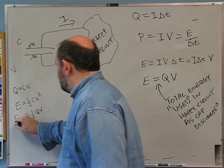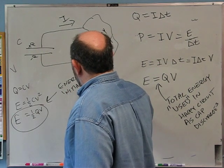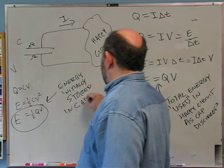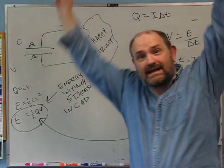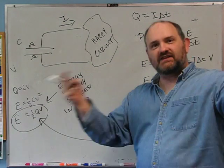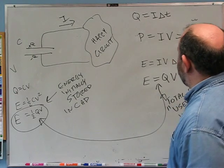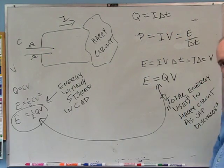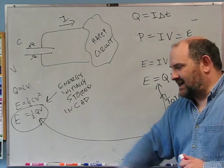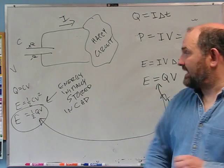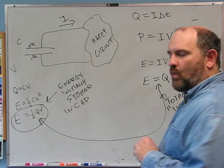But wait: the energy initially stored in the capacitor is one-half QV, while the energy dissipated is QV. They are not the same — we seem to be discharging twice as much energy as we started with. That would imply an infinite energy generation machine. Or it could mean there's an error in the reasoning somewhere. None of the algebra is wrong, but there is a hidden assumption that was wrong.